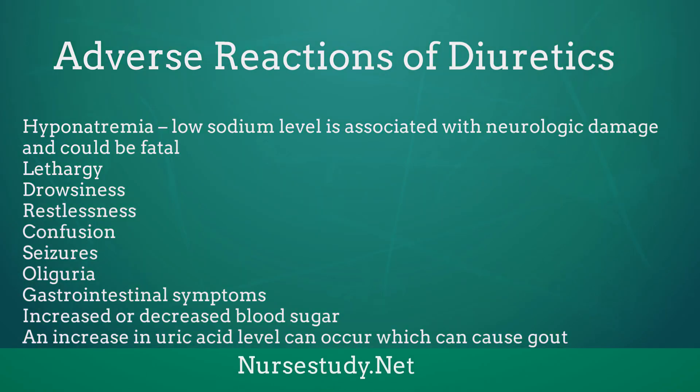Other adverse reactions include hyponatremia, which is a low sodium level associated with neurologic damage and could be fatal. Symptoms include lethargy, drowsiness, restlessness, confusion, and seizures. Additionally, oliguria, gastrointestinal symptoms, increased or decreased blood sugar, and an increase in uric acid level can occur, which can cause gout.